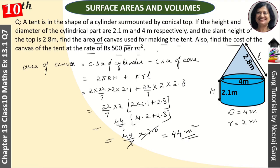Iske baad humse puchha hai cost of the canvas of tent at the rate of 500 per meter square. To cost kitnye ho jayegi? Cost is equal to kya ho jayega? Simple hai. Jho rate hume diya hua, usse multiply kare dhenge. Rupees 500 into 44, that is equal to rupees 22000. Yeh humara a gaya total cost of the canvas.